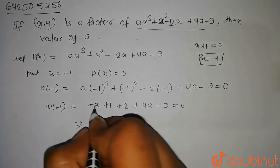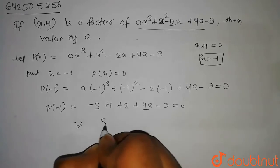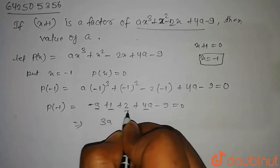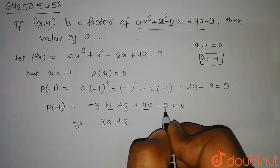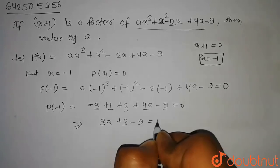So from here we get minus a plus 4a will be 3a, and 1 plus 2 that is 3, and minus 9 equal to 0. So from here we get 3a minus 6 is equal to 0.